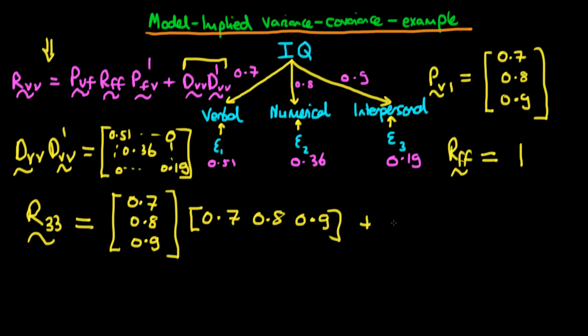And then finally, all we need to do is we just need to add on this matrix here, which is this DVV times DVV primed, which is just 0.51, 0.36, and 0.19 as its diagonal components, and 0s otherwise.